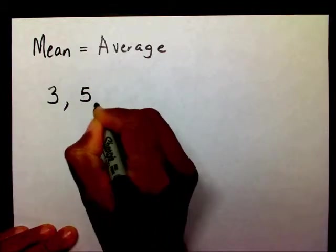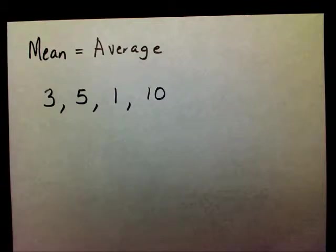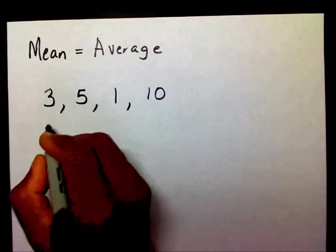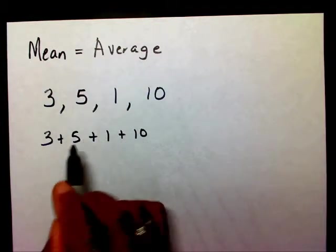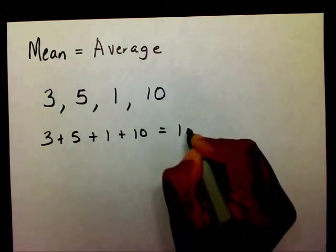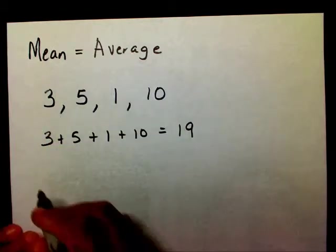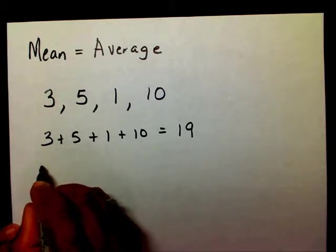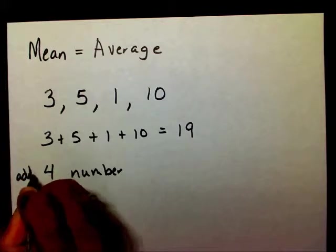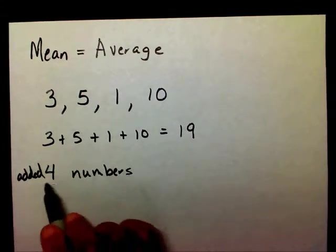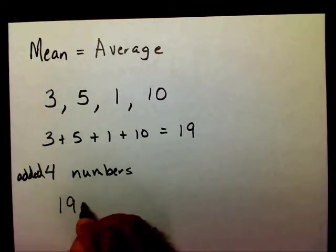So I have 3, 5, 1, and 10. So the first thing I want to do is add these numbers. So I want to say 3 plus 5 plus 1 plus 10. If I add these numbers, I'm going to get 19. That's my sum of these numbers. How many numbers do I have? I have 4 numbers, or I can say I added 4 numbers.